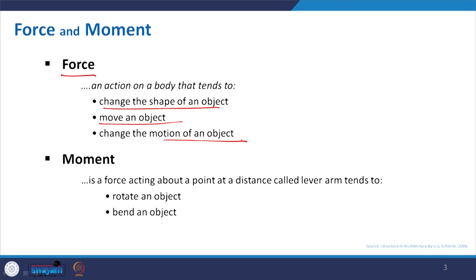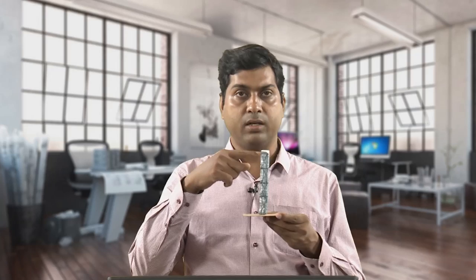What about moment? It is related to the rotation of an object — a force acting about a point with an arm or lever, which tends to rotate or bend an object. For example, consider this model as a high-rise building fixed to the ground. When we put pressure from one direction, it tries to bend because it is anchored at the bottom. But if there is a pivot point and I put force with a lever, it gives a rotation — like propellers and wheels acting on moment.